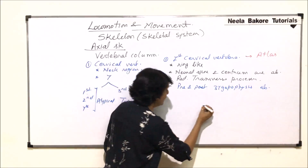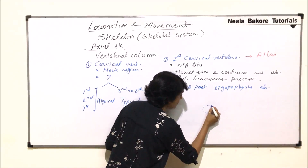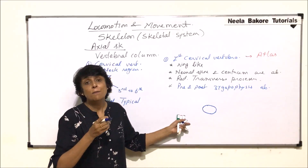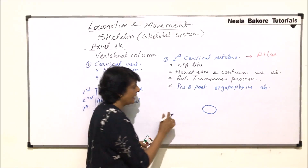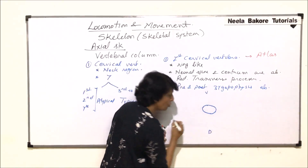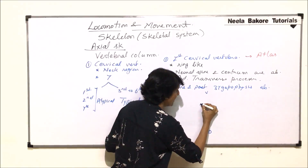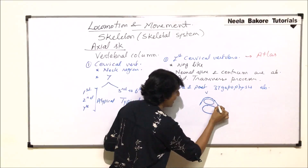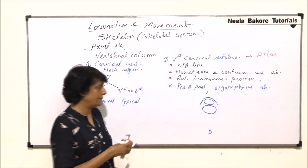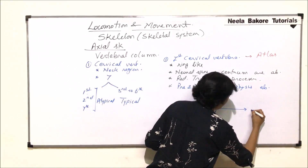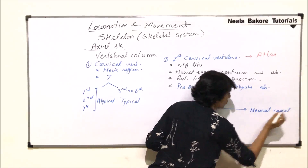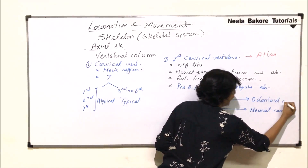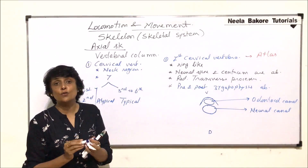When we look at the atlas diagram, this is the neural canal through which the spinal cord runs — this is where the brain stem continues with the spinal cord. On the ventral side there is no centrum; instead there is one more canal known as the odontoid foramen or odontoid canal. The neural canal carries the spinal cord, while the odontoid canal is where the odontoid process will fit in.